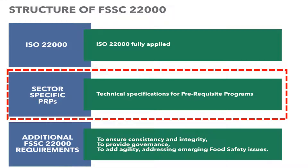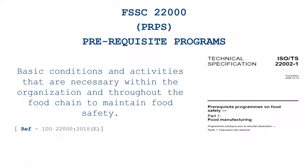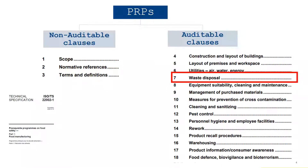Hello everyone, I hope you all are fine and doing well. Today I'm going to discuss about the PRPs. For those who have not seen my previous video, I'm going to describe again what PRPs are - they are the basic requirements that we need to implement toward the supply chain to maintain food safety, and this is from technical specification standard ISO/TS 22002-1.